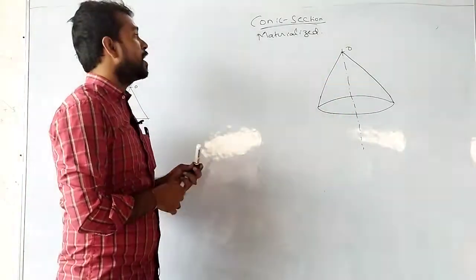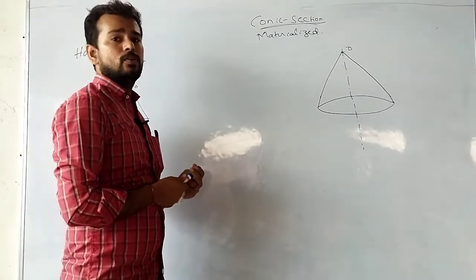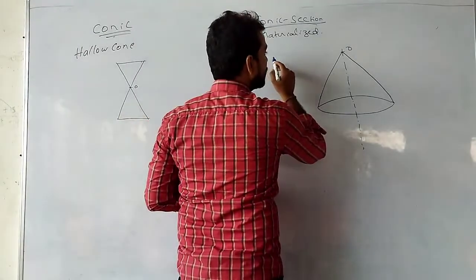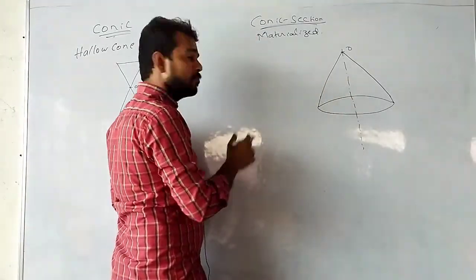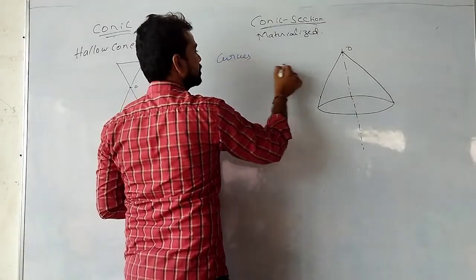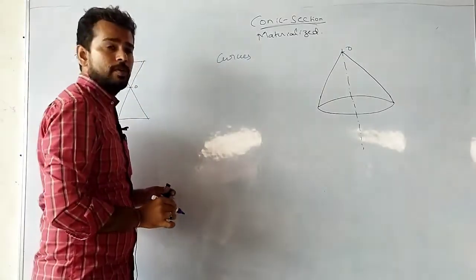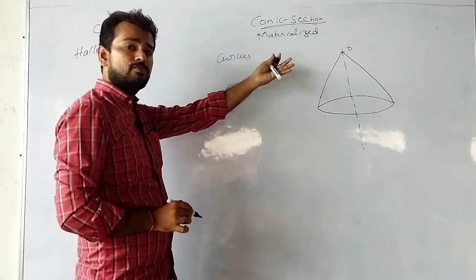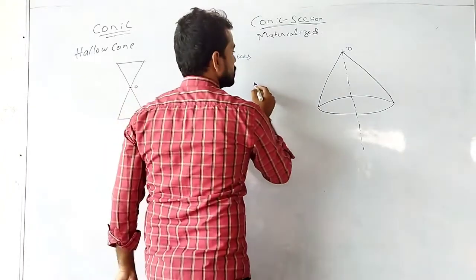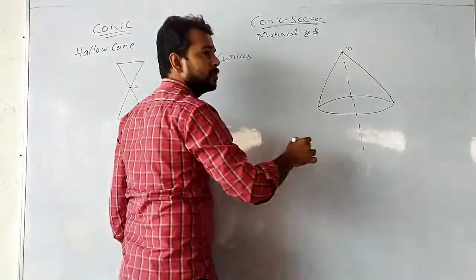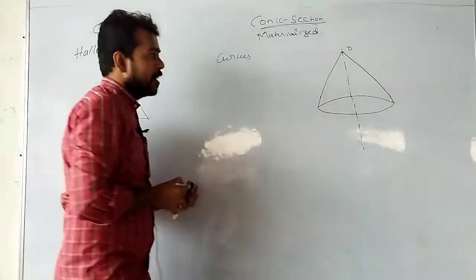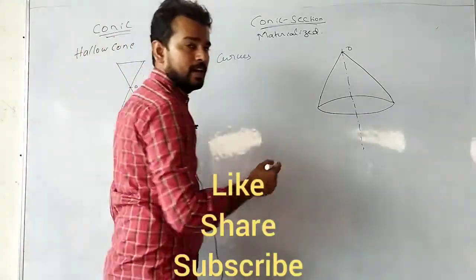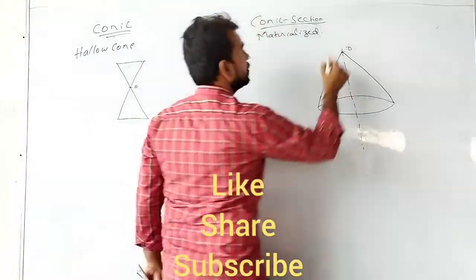Curves formed by sectioning a cone are called conic sections, or conics. Now I will tell you what type of curves we get by sectioning this cone in different orientations using a cutting plane or sectioning plane.